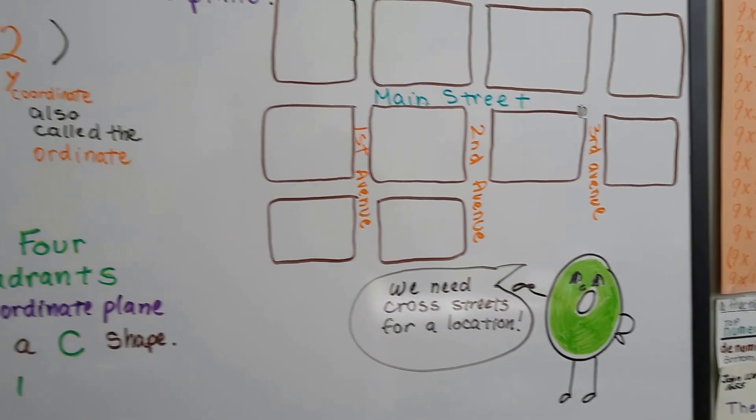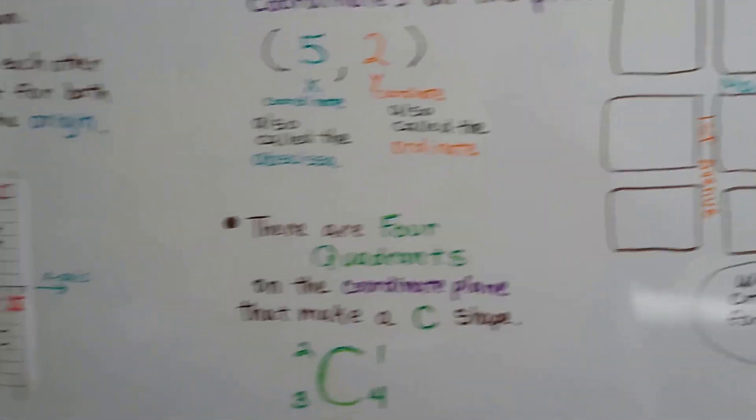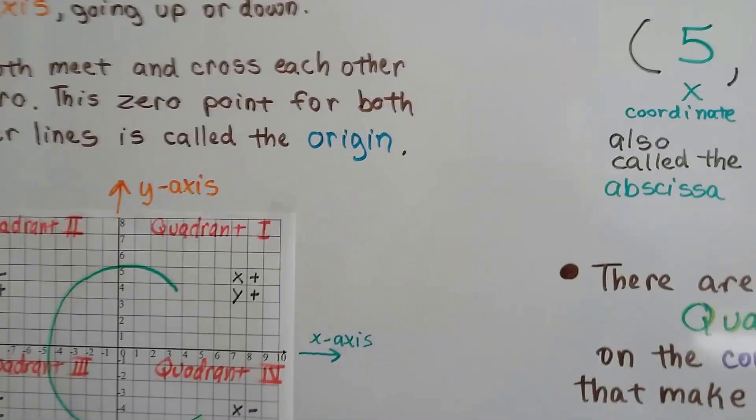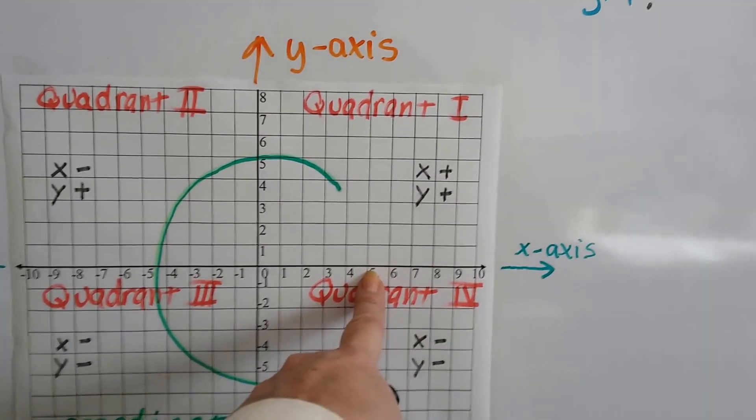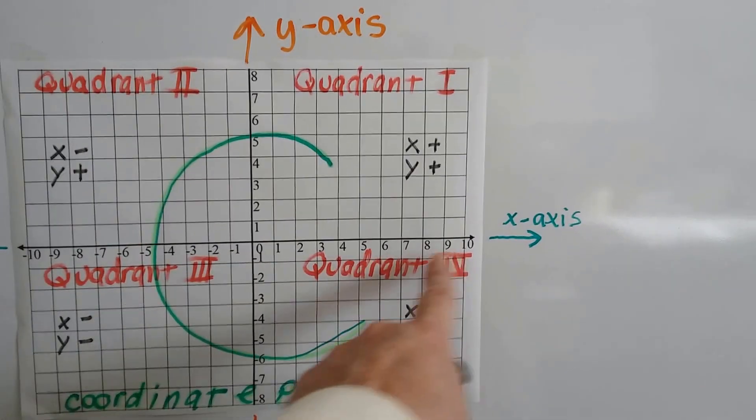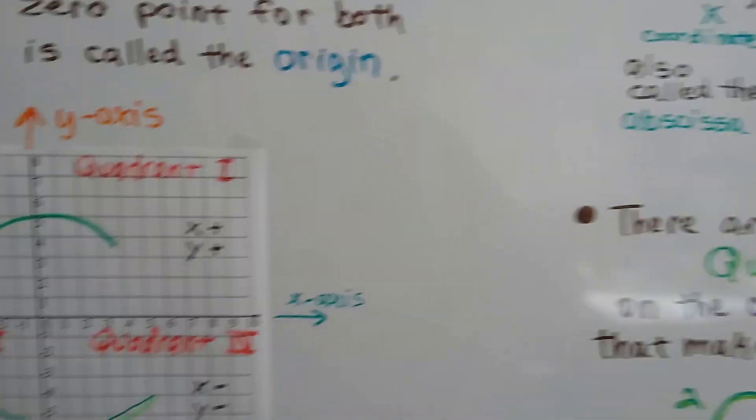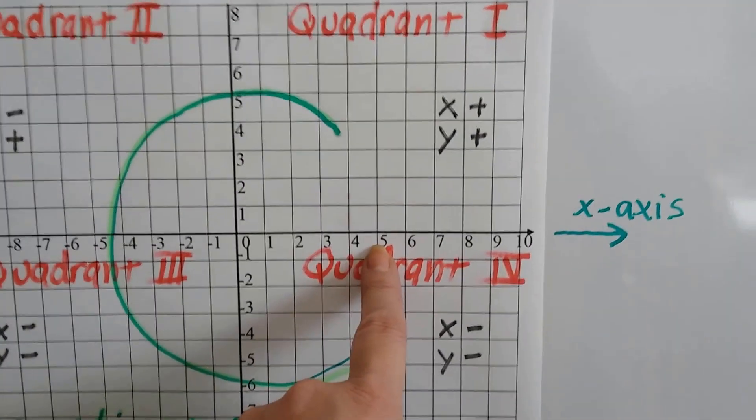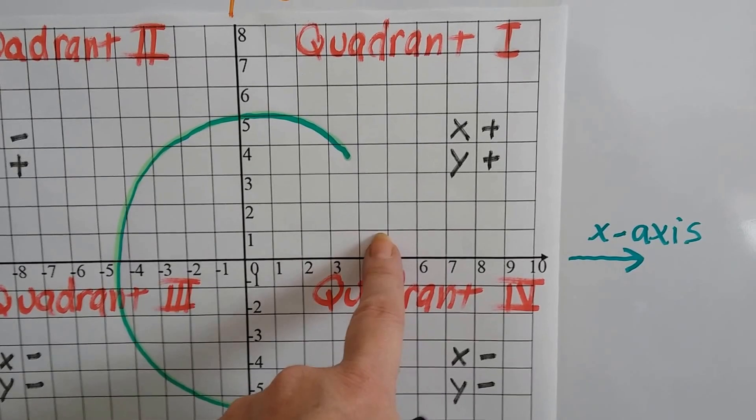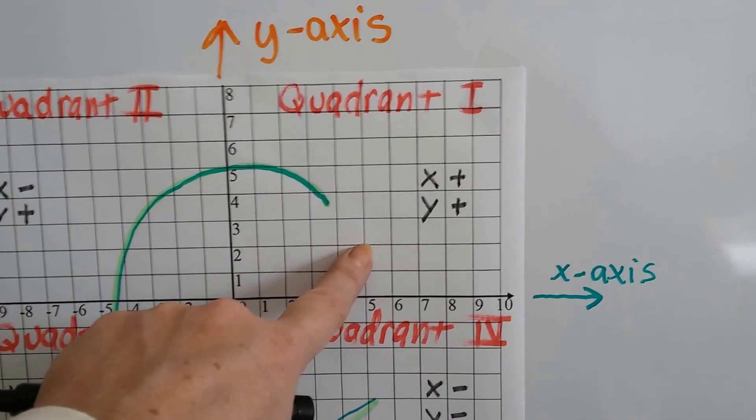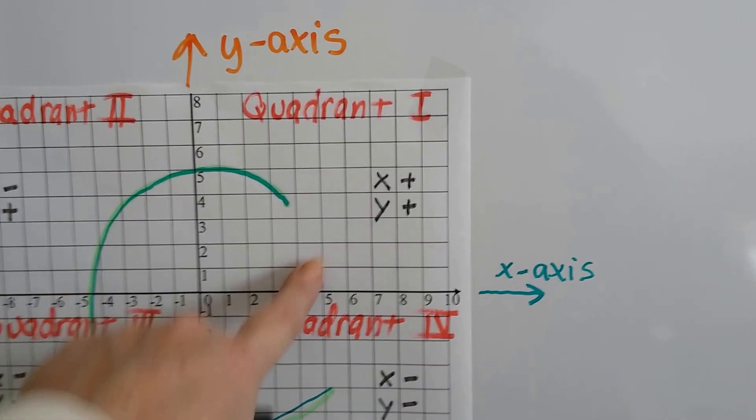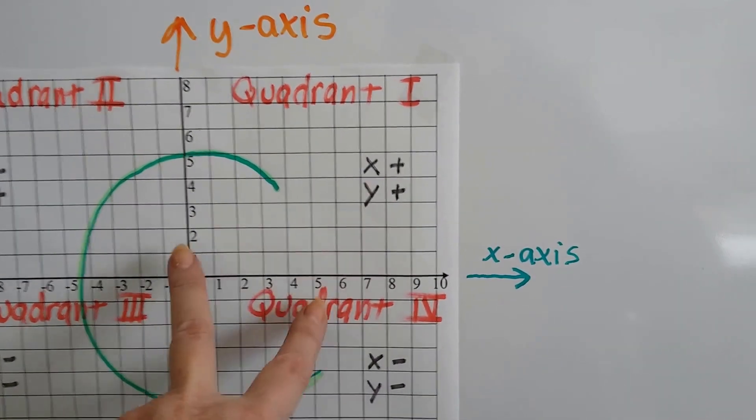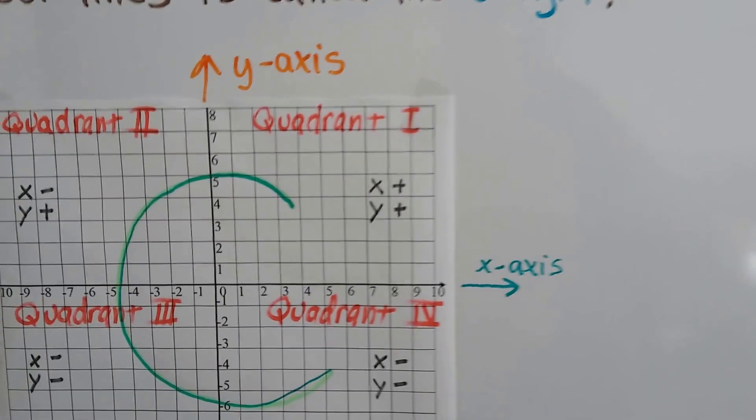That's how we plot points. We need cross streets for a location. If someone says it's at a 5 on the x, that doesn't help us know where the point is. We just know that it's on Main Street somewhere. It's the same thing. But the minute they give us this 2, we know we can go to the 5 on the x, and we can go 1, 2 for the y, and we know our point is right here and we know the location. You have to have two points that meet together. That's the ordered pair.